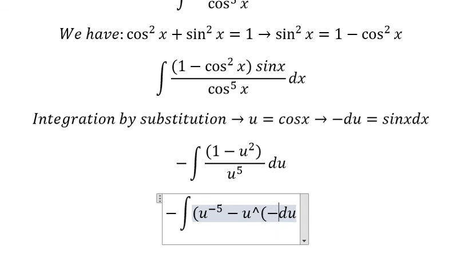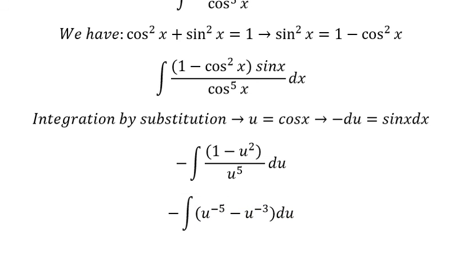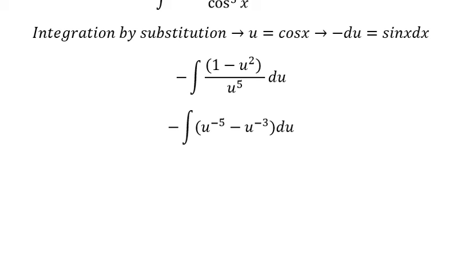will get the power of negative number 3. And then we got a final answer: u to the power of negative number 5 plus 1 over negative number 5 plus 1, and we have u to the power of negative number